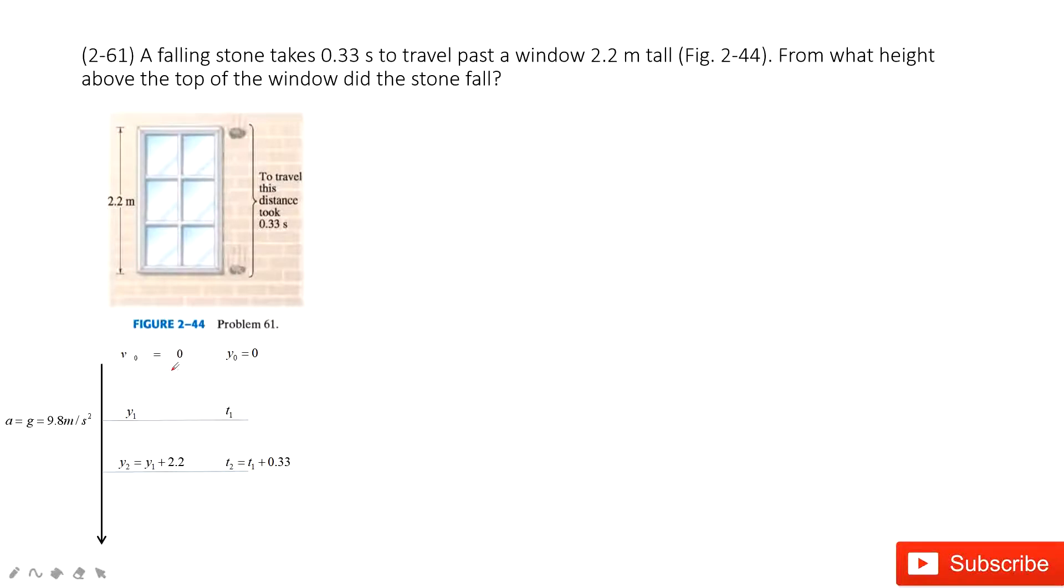Then this stone falls to the top of the window. At the top of the window, this position is y1. The time taken is t1. Then the stone falls to the bottom of the window. The position is y2. Time taken is t2.